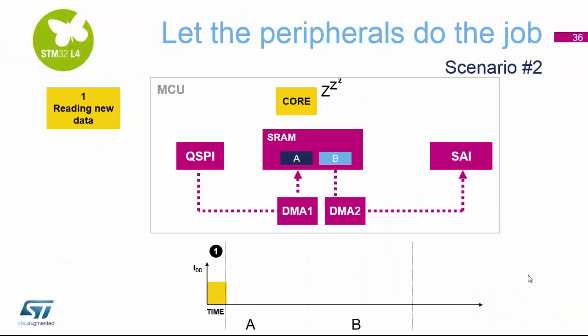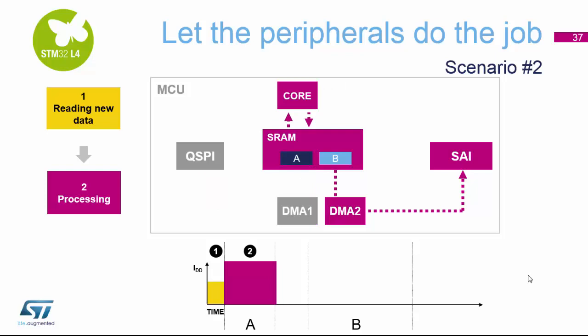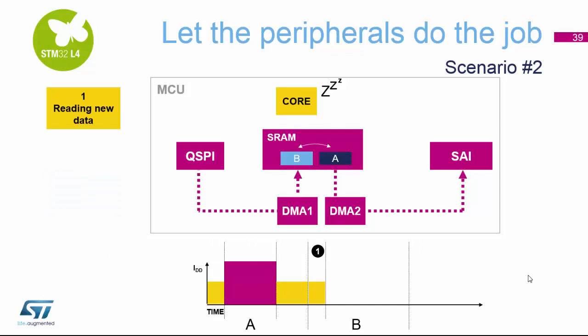Looking at our audio player application, the core is asleep while the Quad SPI streams information into one RAM block ready to be processed. In parallel, a second RAM block is used with another DMA to stream audio signals out to our headphones. The core then wakes up, processes the batch of data that came in from the Quad SPI ready to be sent out, and then goes back to sleep. When DMA number 2 reaches the end of its area, the buffers switch around to give a seamless audio stream from the SAI audio peripheral, and the Quad SPI fills buffer B with the next batch of data. The cycle then continues.